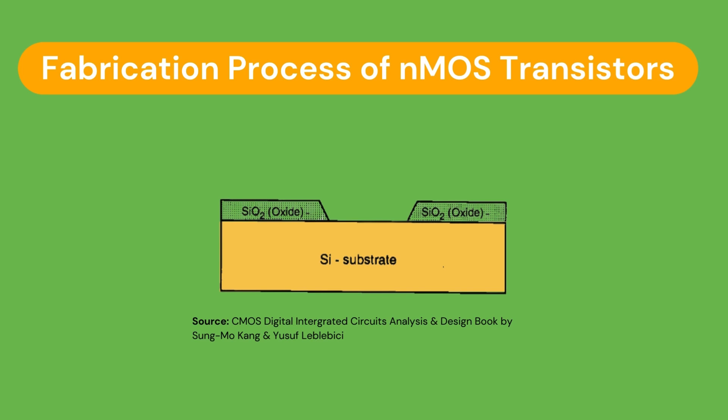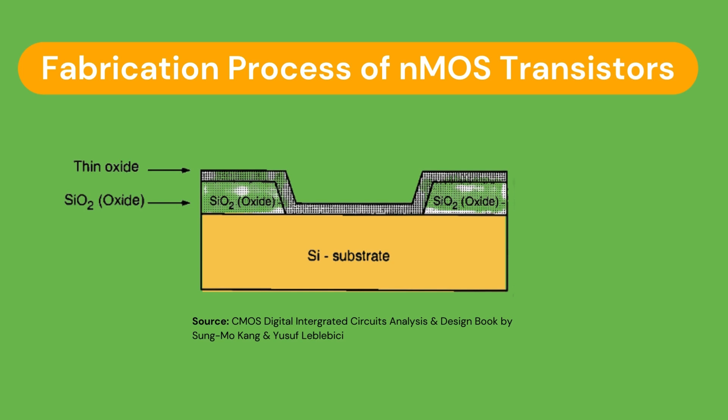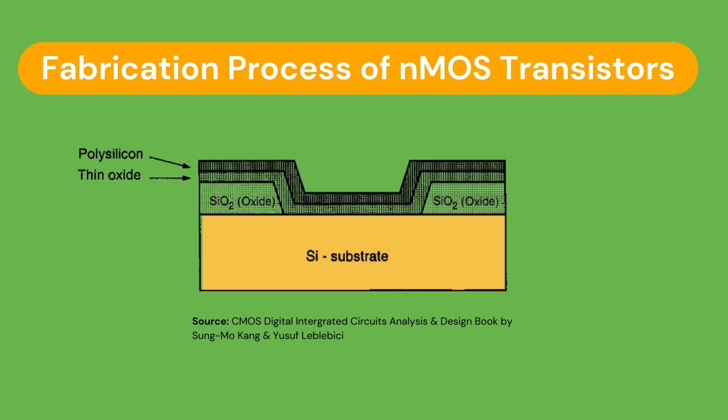After this step, the surface is covered with a thin, high-quality oxide layer, which will eventually form the gate oxide of the MOS transistor. On top of this thin oxide layer, a layer of polysilicon is deposited. Polysilicon is used both as a gate electrode material for MOS transistors and as an interconnect medium in silicon-integrated circuits. Undoped polysilicon has relatively high resistivity, but this resistivity can be reduced by doping it with impurity atoms.